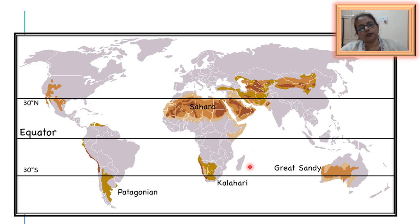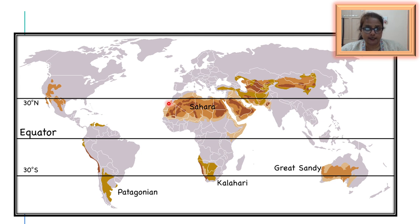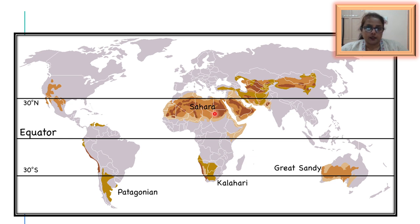The tropical deserts of the northern hemisphere include the Sahara, which is the largest desert in the world, extending from the Red Sea to the Atlantic Ocean. It is nearly 5,500 kilometers from east to west and about 2,000 kilometers from north to south. It includes countries like Egypt, Libya, Algeria, Mali, Chad, Sudan, and Niger. The Sahara covers a very large part of northern Africa — in fact, it is considered to be even larger than the United States of America.